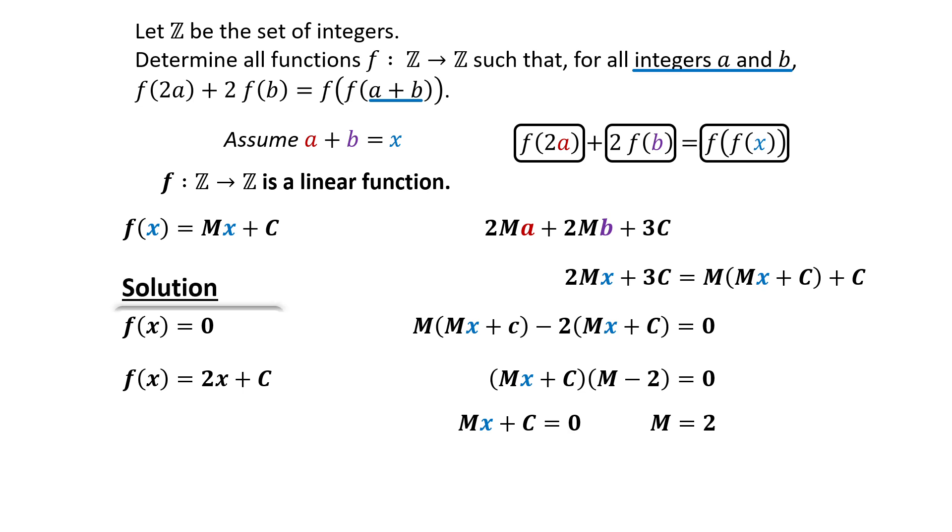Now we get all the functions: F of X equals 0, or 2X plus C, where C is any integer.